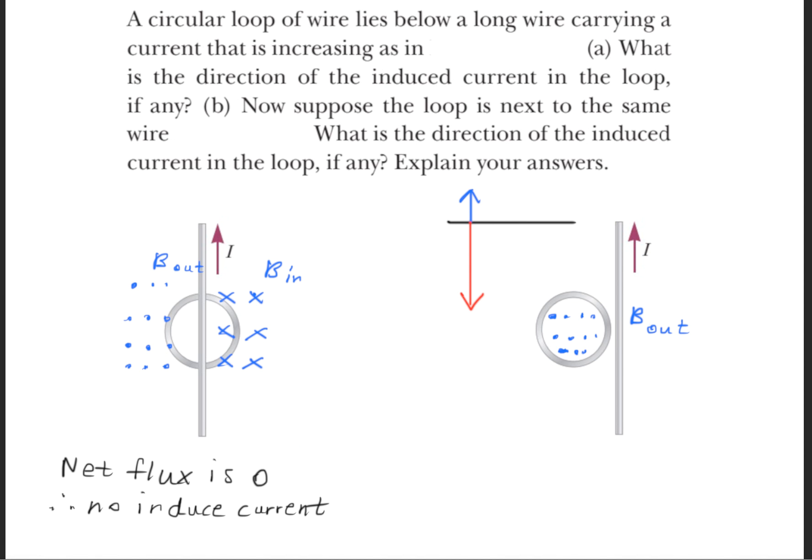So we need to have a B field that forms going down this way so that it will counteract the increase of this magnetic field. So this will result in an induced current that will move clockwise. And if you take your right hand and you follow the current with your thumb, you'll notice that the B field that forms, the induced magnetic field, will counteract the change in flux, thus verifying that the current that gets induced is moving clockwise.